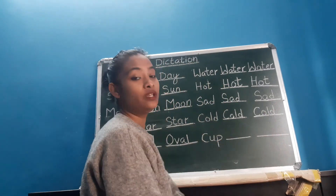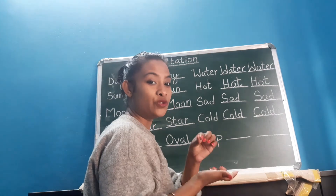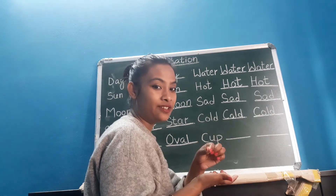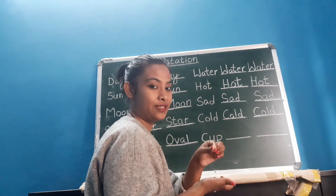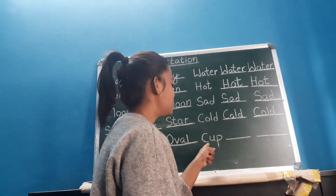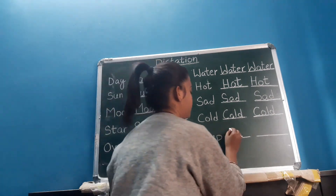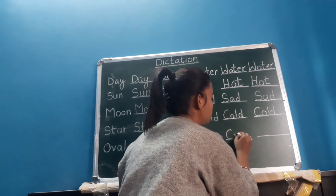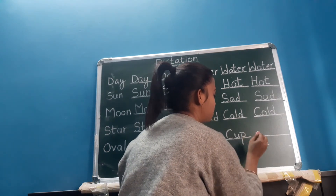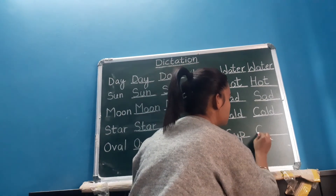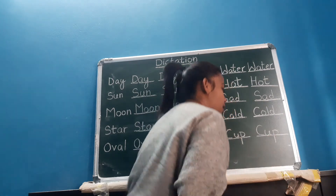The last word: C, U, P — cup. What is a cup? You drink tea from a cup, yes, like this. C, U, P — cup. C, U, P — cup. Again, C, U, P — cup.